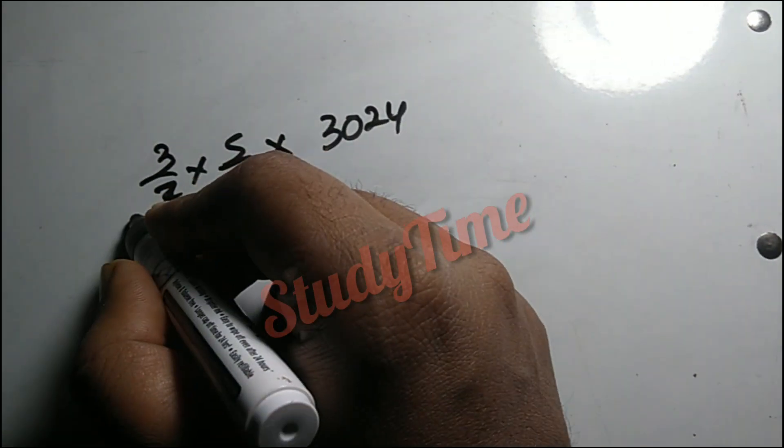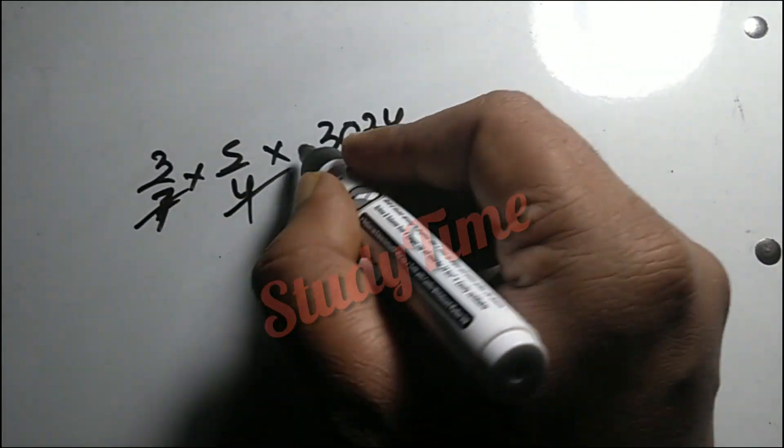So we set up the calculation with the fractions and 3024, cutting and simplifying 7 and 4.